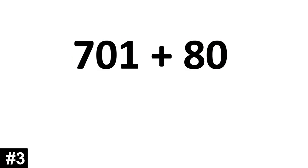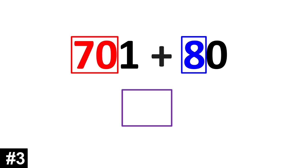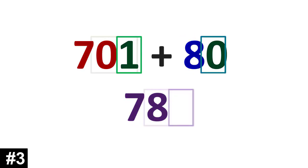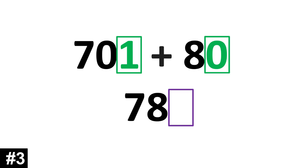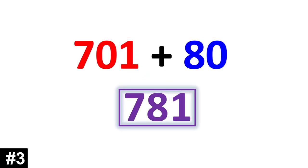How about 701 plus 80? 701 has 70 tens. 80 has 8 tens. We add them together. We get 78. We look to the ones. 1 and 0 gives us 1, and we have 781.